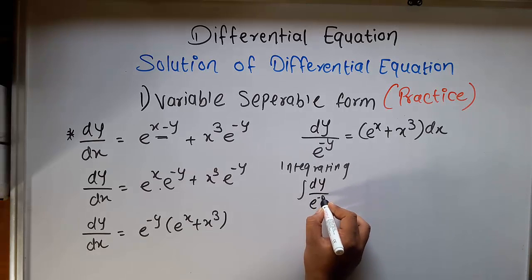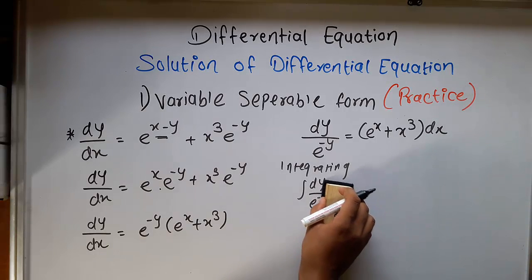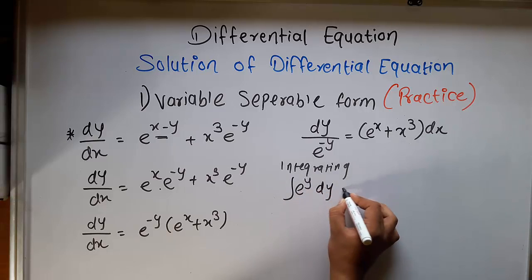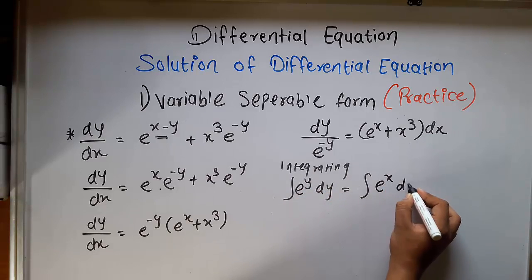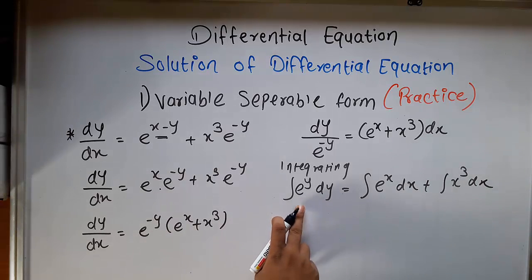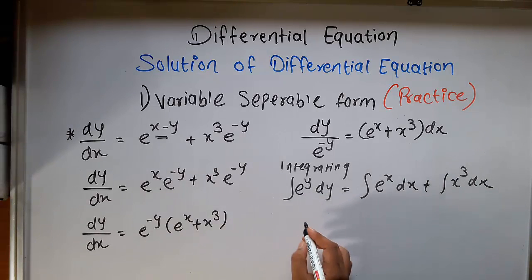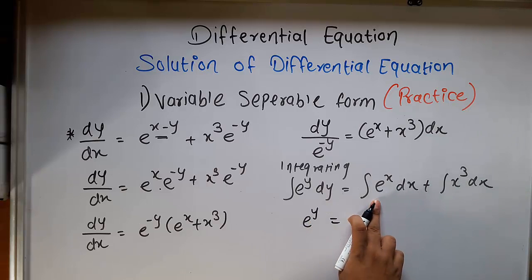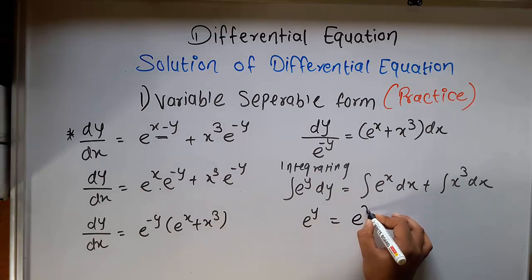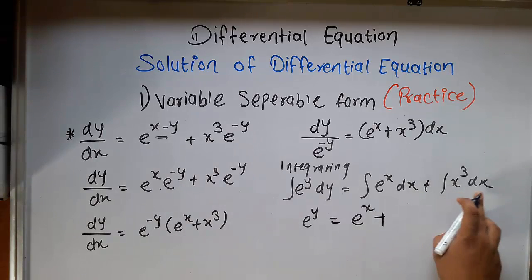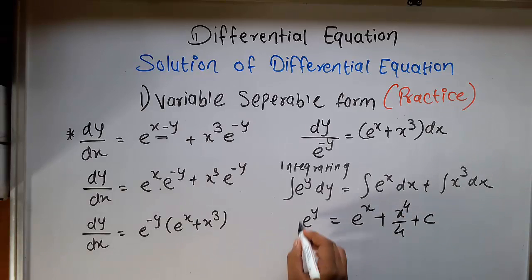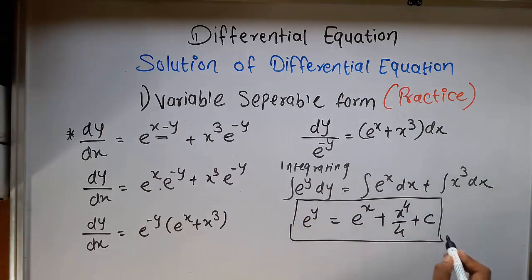Now, integrating both sides: integrating e raised to y dy. We transfer e raised to minus y to the upside, so it becomes e raised to y dy equal to integrating e raised to x dx plus x cubed dx. The integration gives e raised to x, plus integrating x cubed with respect to x gives x raised to 4 upon 4, plus c. So this is the solution of the differential equation.